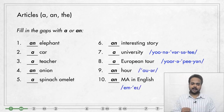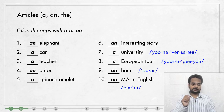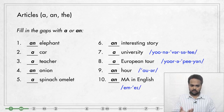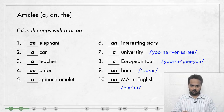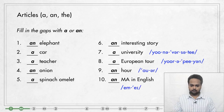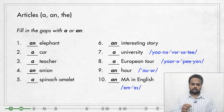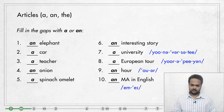In number nine, the spelling has an H at the start but that H is silent. We don't say 'hour' — we say 'hour.' The first sound is an OW sound which is a vowel sound, so this is an hour. In the same way in number ten, we say MA. M starts with an E sound which is again a vowel sound, so an MA in English.